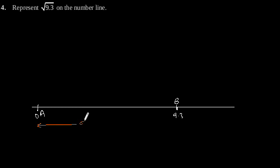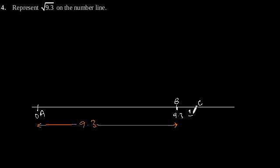This length AB is 9.3. Now from B, mark a distance of length 1 and label that point C. Now let's find the midpoint of A and C.